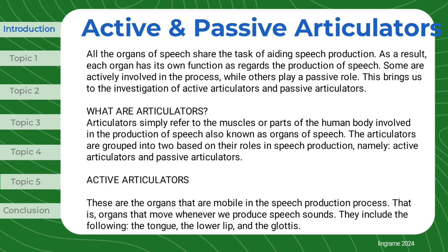Active articulators are the organs that are mobile in the speech production process. That is, organs that move whenever we produce speech sounds. They include the following: the tongue, the lower lip, and the glottis.